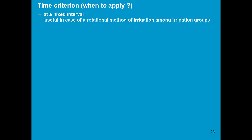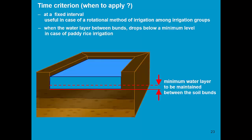The fixed interval can change during the season and might become shorter when the weather becomes hotter and the crop is more developed. The last criteria is useful in the case of paddy rice irrigation. The criterion is that irrigation will be applied when the water layer between the bunds drops below a minimum value. Also here that minimum water layer that needs to be maintained between the soil bunds can vary during the growing cycle. It might be small at transplanting and then gradually increase throughout the season.